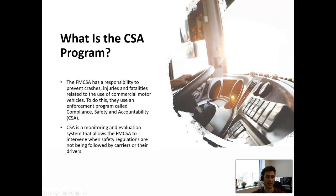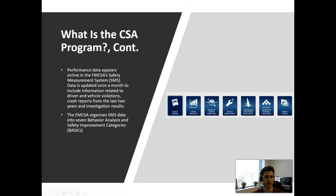Starting with the program itself, the FMCSA has a responsibility to prevent crashes, injuries and fatalities related to the use of a CMV. To do this, they use an enforcement program called the Compliance Safety and Accountability, or CSA. CSA is a monitoring and evaluation system that allows the FMCSA to intervene when safety regulations are not being followed by the carriers or their drivers. Performance data will appear online in the Safety Measurement System and data is updated once a month to include information related to driver and vehicle violations, crash reports from the last two years, and investigation results. The FMCSA then organizes all the data into seven behavioral analysis and safety improvement categories, also known as Basics.